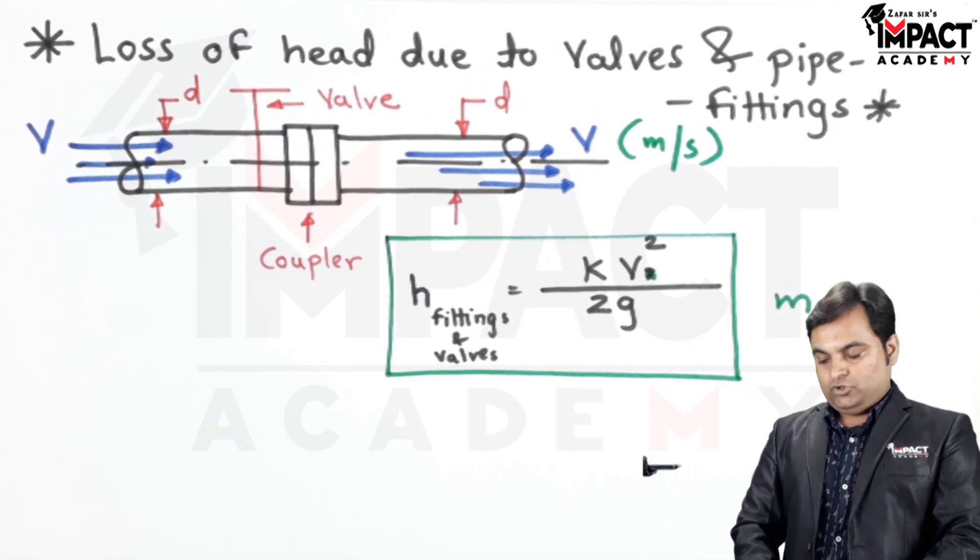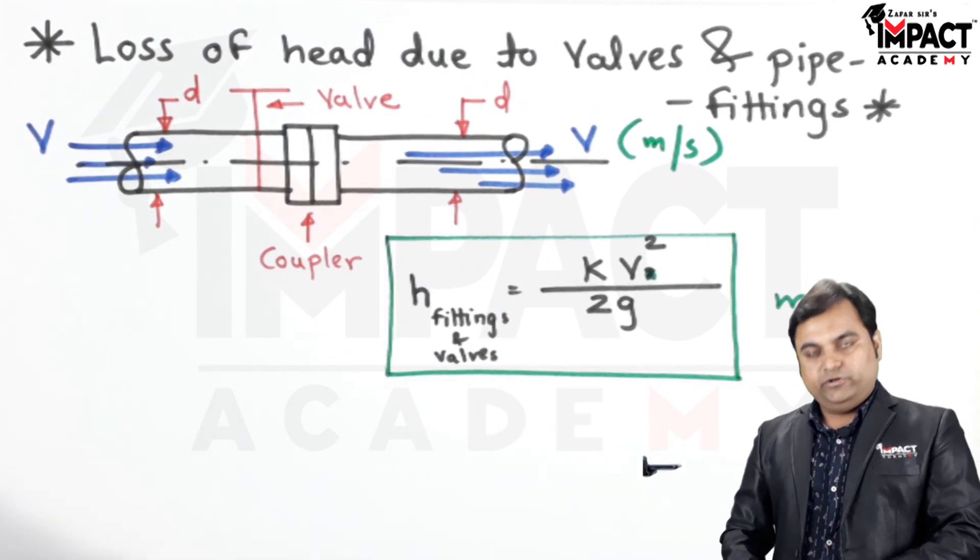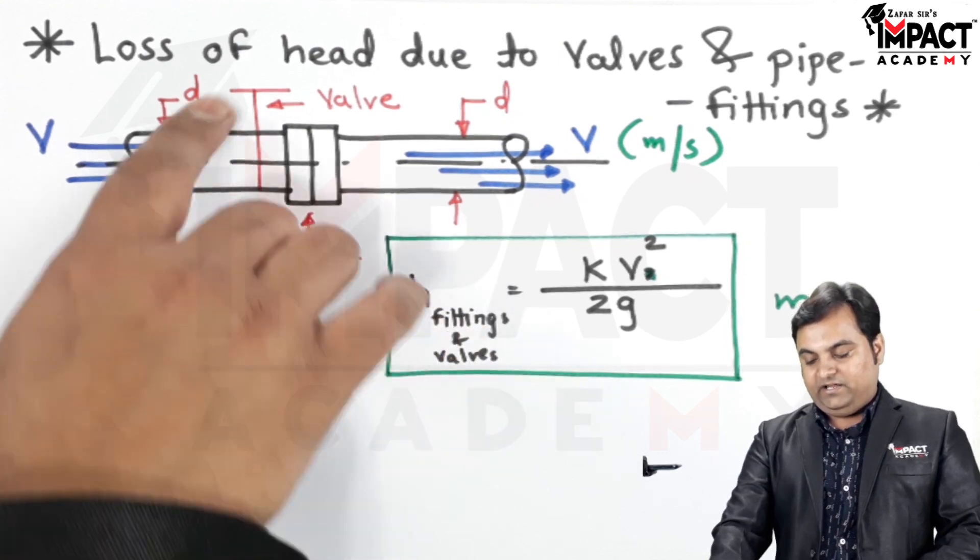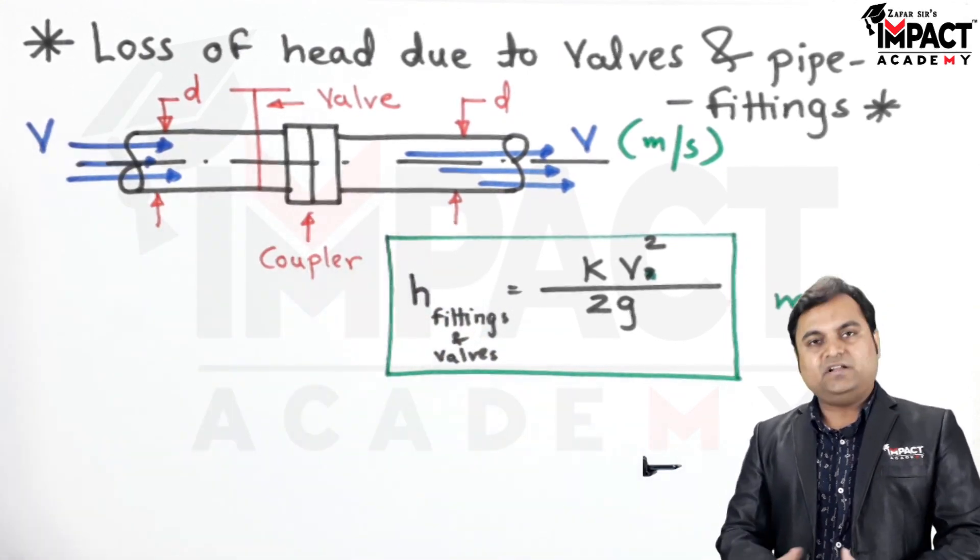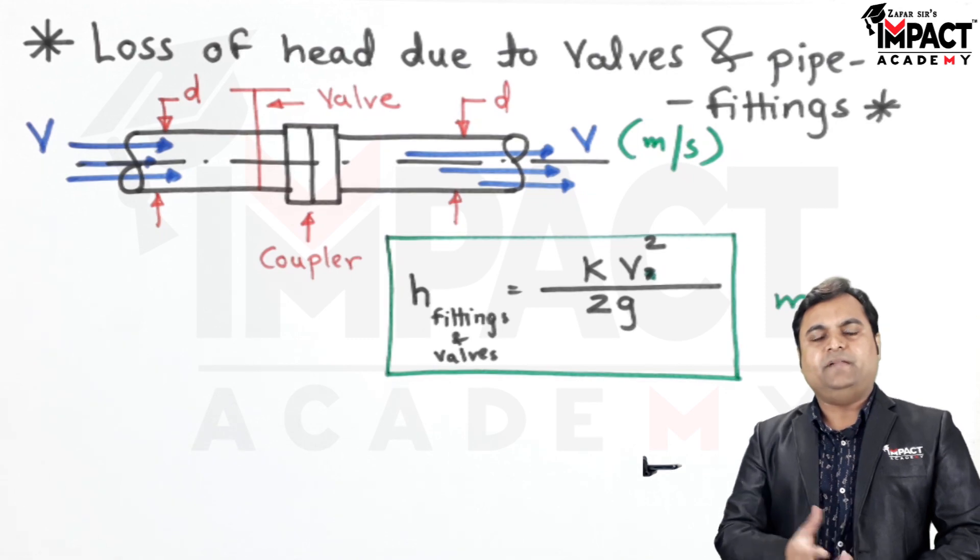2 and g are constants. So whenever there is a fluid flowing through a pipeline, and if there are valves or any other fittings—like here I have shown an example of a coupler, it can be any...